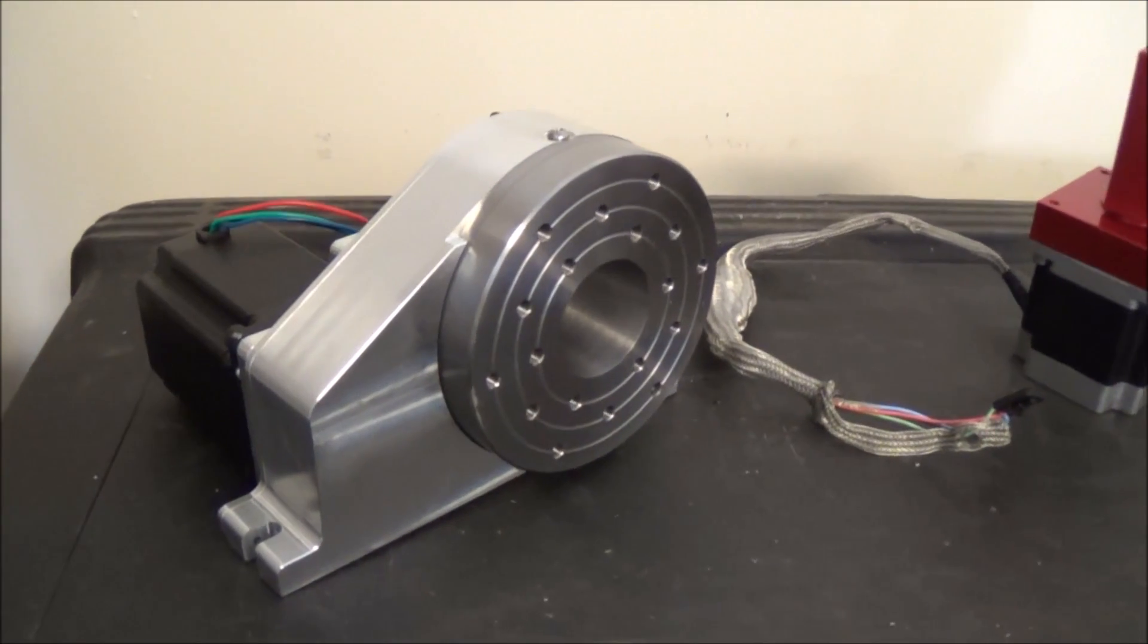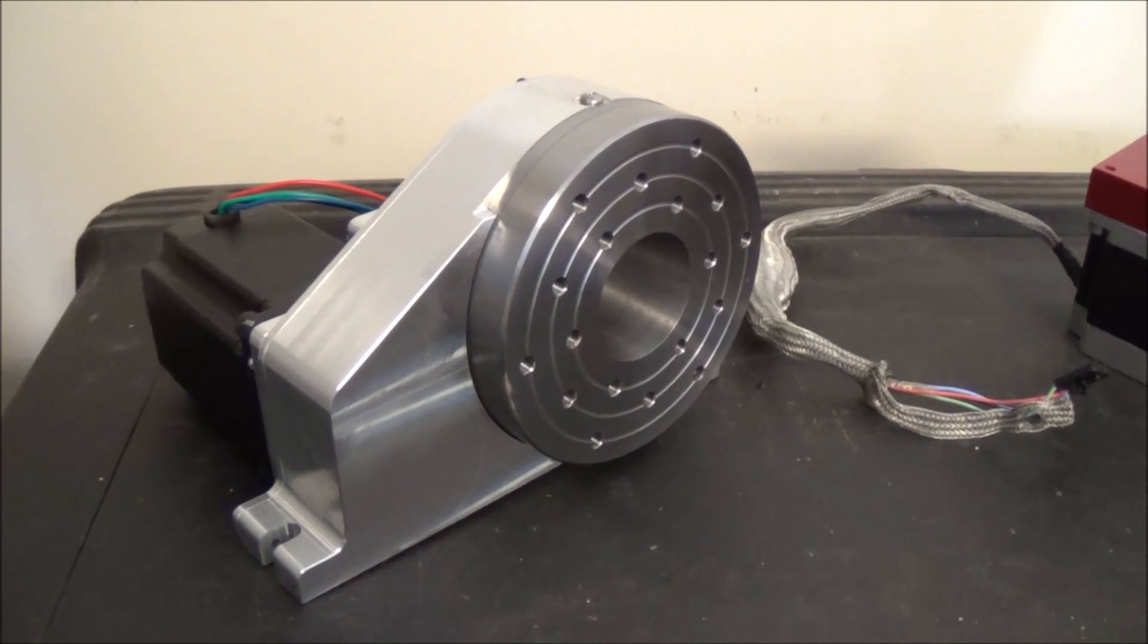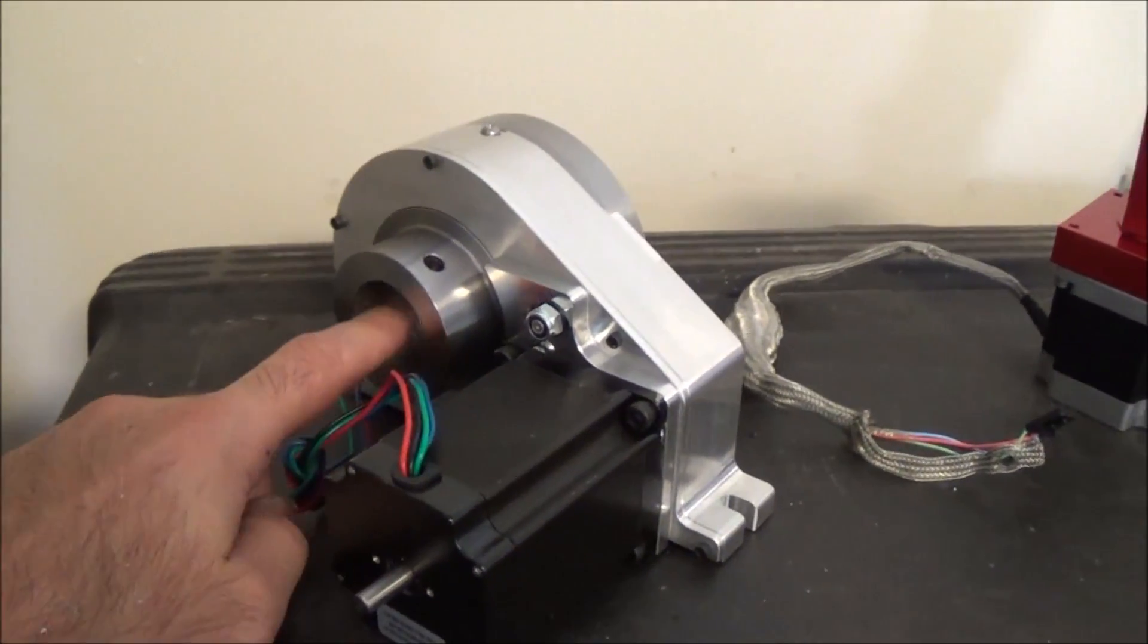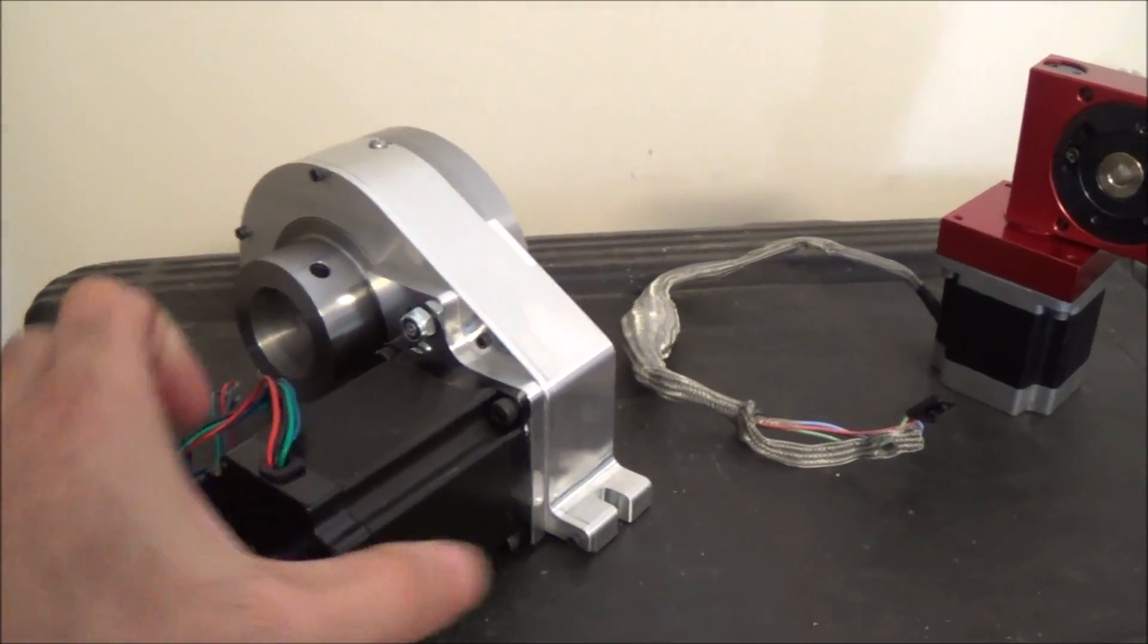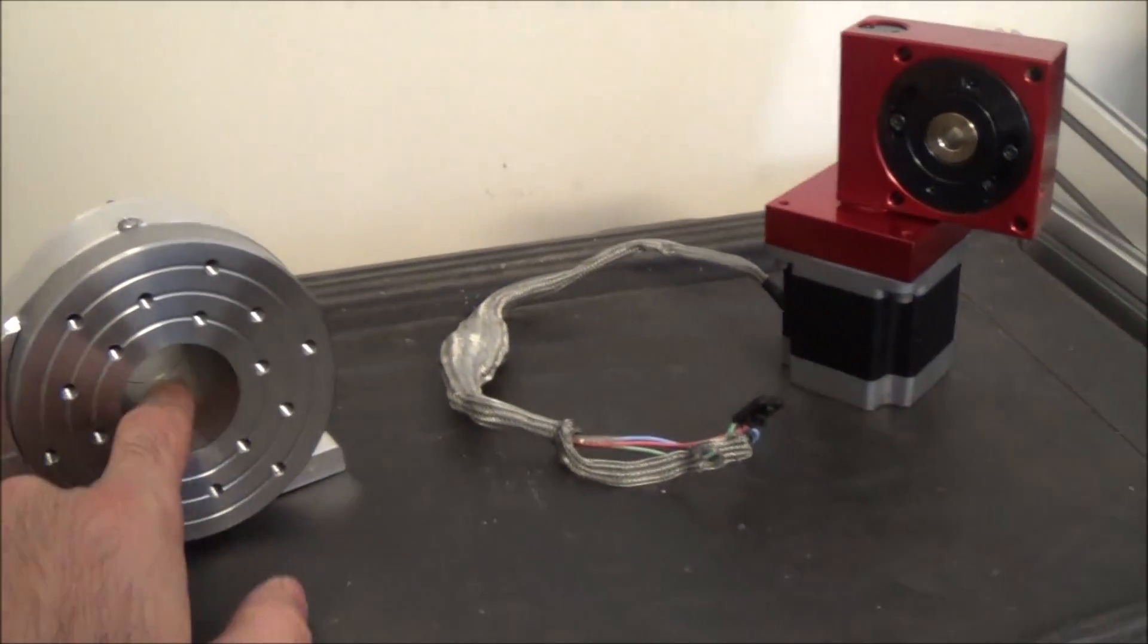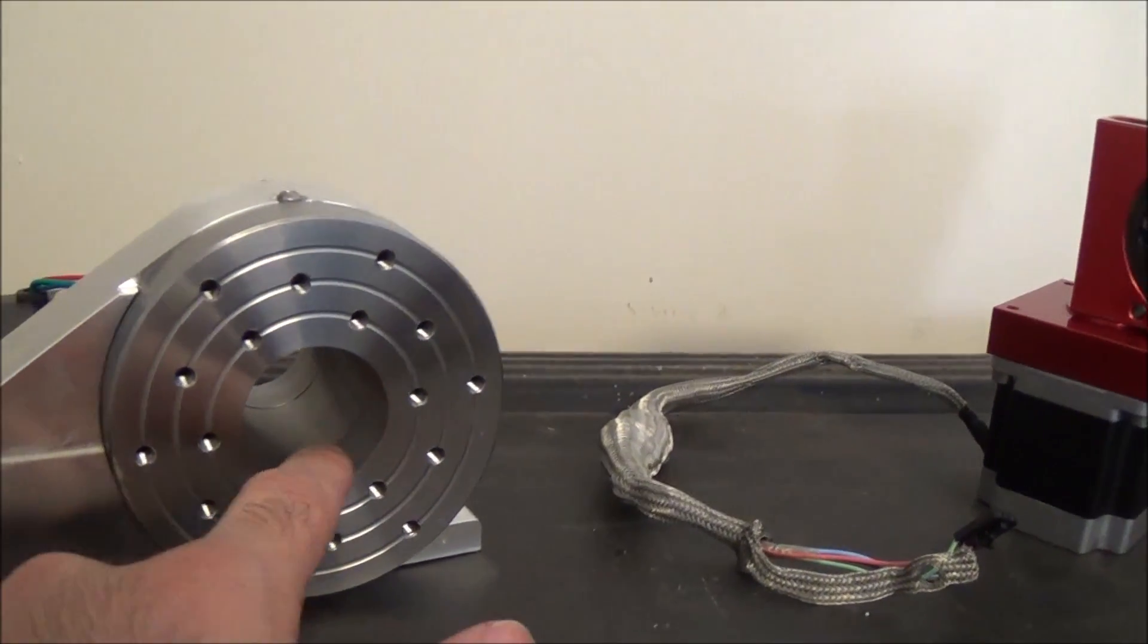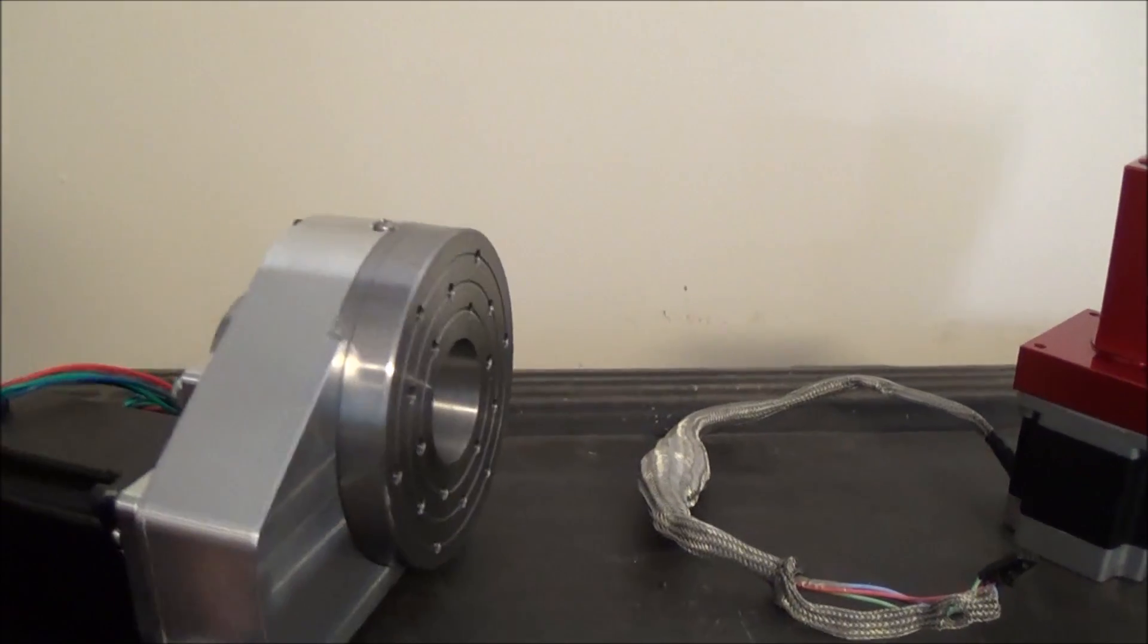This is the six to one positioner with a dual shaft and a 5C collet connection. You can probably see on the camera there's a taper in there and a bolt pattern.